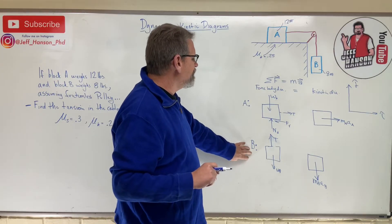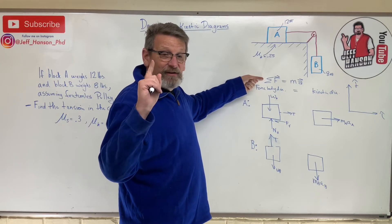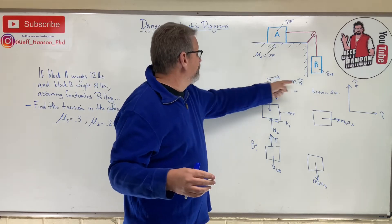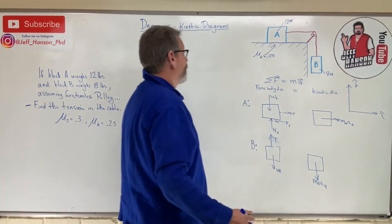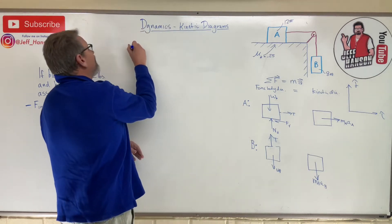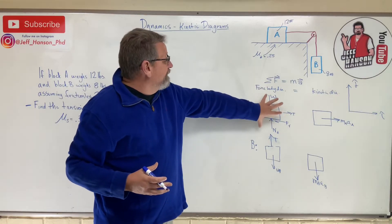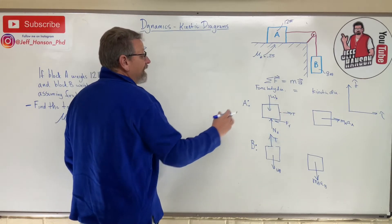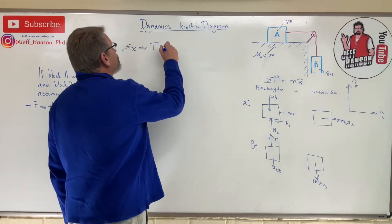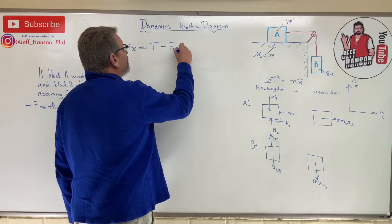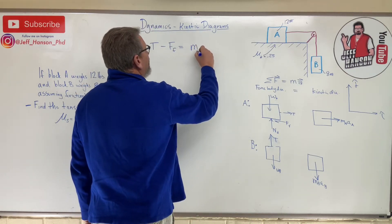That vector equation can be broken into two scalar equations by looking at components. For block A in the x direction: summing forces equals mass times acceleration. In the x direction I have positive T and minus the friction force, which equals m_A times a_A. That is equation number one.